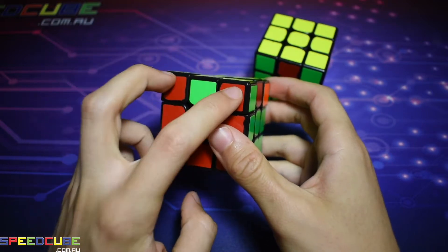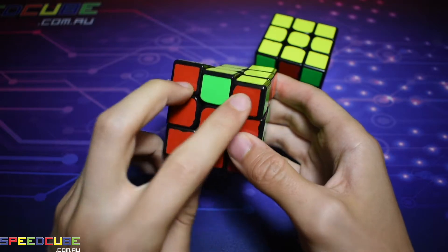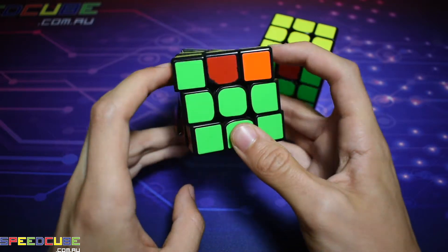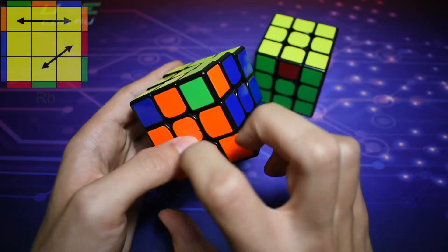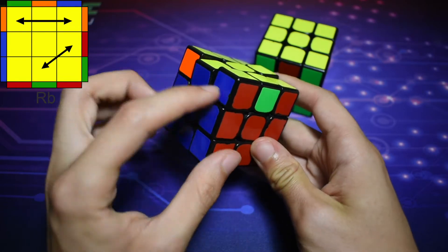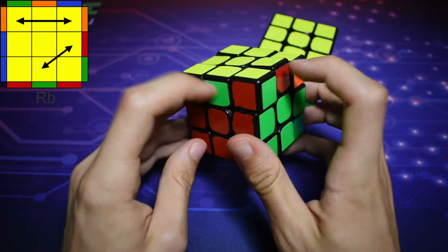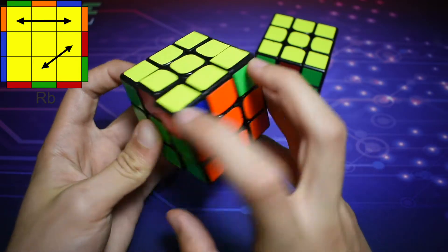The R permutation is an adjacent swap PLL as you can tell by the bar of corner stickers over here and no other bar. It is recognizable because it's basically a two swap of corners and a two swap of edges. So there'll be one 2x1 block and then there'll be two edges that need to switch and then two corners that need to switch like so.